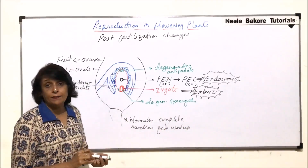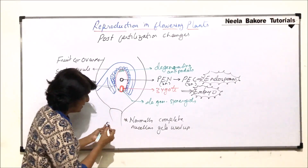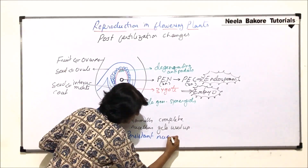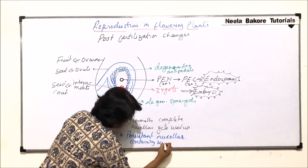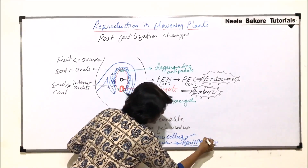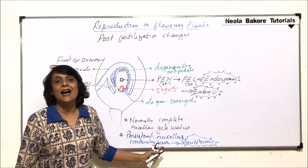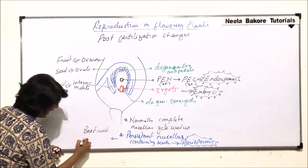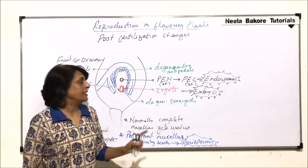Normally the nucellar tissue gets completely used up. But sometimes, even after formation of a complete seed, some nucellar tissue still remains — this is called persistent nucellar tissue. Seeds containing persistent nucellar tissue are called perispermic seeds. Examples of perispermic seeds are the seeds of beetroot and black pepper.